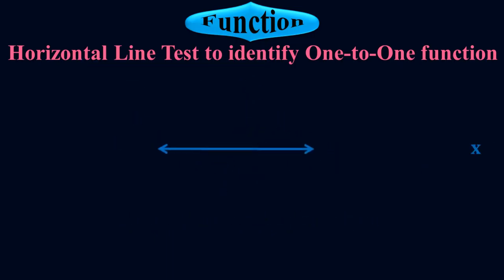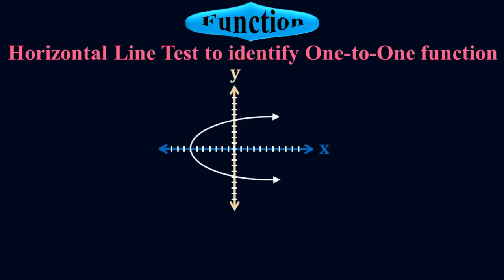Let me check one more example where my graph is a rightward parabola, to check whether it is a one-to-one function or not. First thing is first — check whether it is a perfect function. Let me apply the vertical line test here. The vertical line touches the graph twice at these points, so it is not a function.